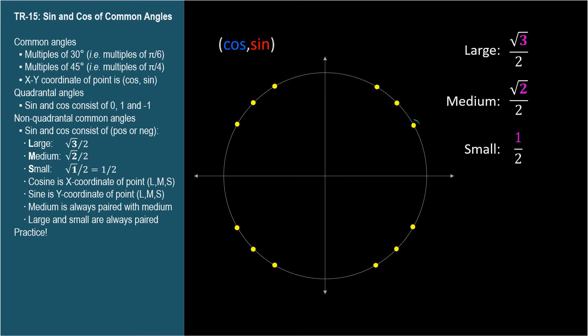Let's look at the three common angles in quadrant one. You should remember these are thirty, forty-five, and sixty degrees. Let's draw arrows corresponding to their x-coordinates, which are their cosines. There's a large, a medium, and a small.